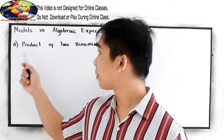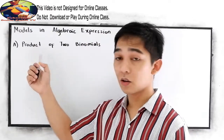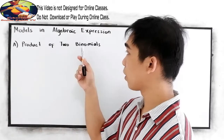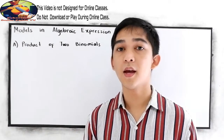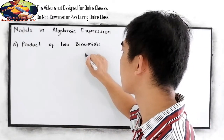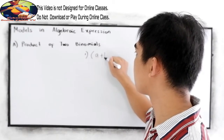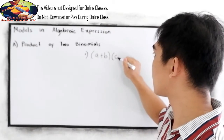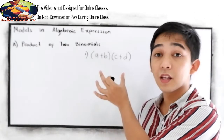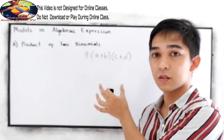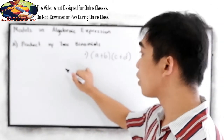The first model is the product of two binomials. When we say product, it means we are going to multiply. When we say binomial, it is composed of two terms. Let's have our first example: (a + b) times (c + d) — multiplying the two binomials.